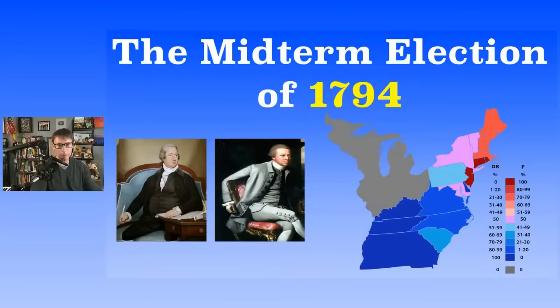The Federalists were led by George Washington, John Adams, and Alexander Hamilton. On the Democratic-Republican side, they were led by Thomas Jefferson, James Madison, George Clinton, and folks like that.